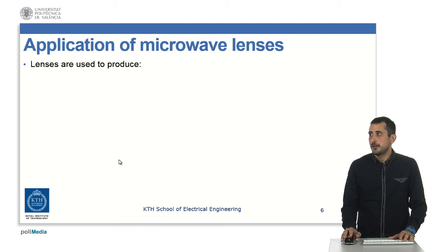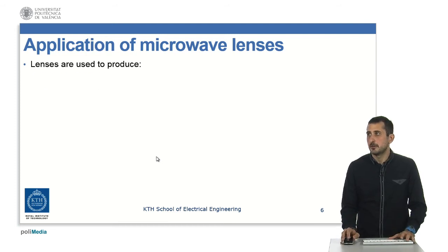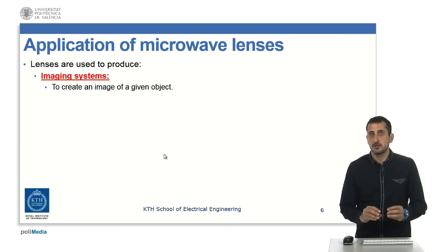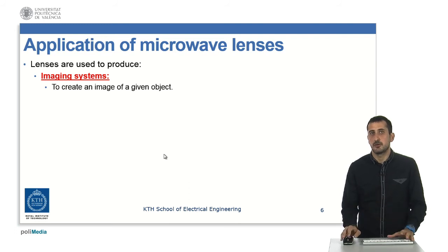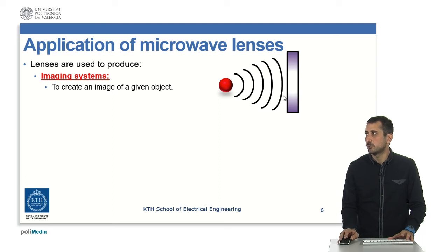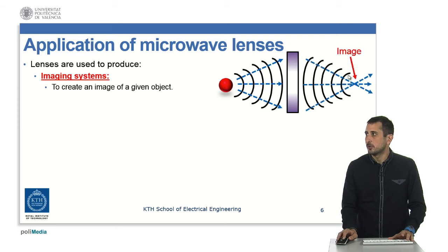In general, microwave lenses can be applied for two types of main systems. The first is what we call imaging systems — they are used to create an image of an object on the other side of our lens. Here we have an object, a small sphere, and here we have a lens. If this object emits a wave, it will arrive at our lens, and after the lens we expect this wave to be confined in a point that we call the image.